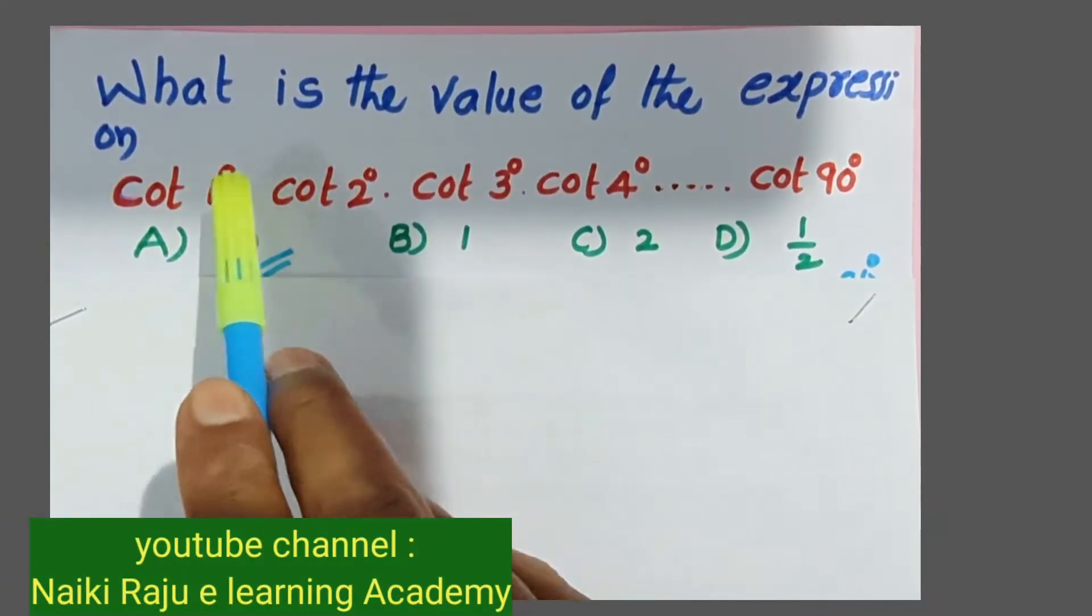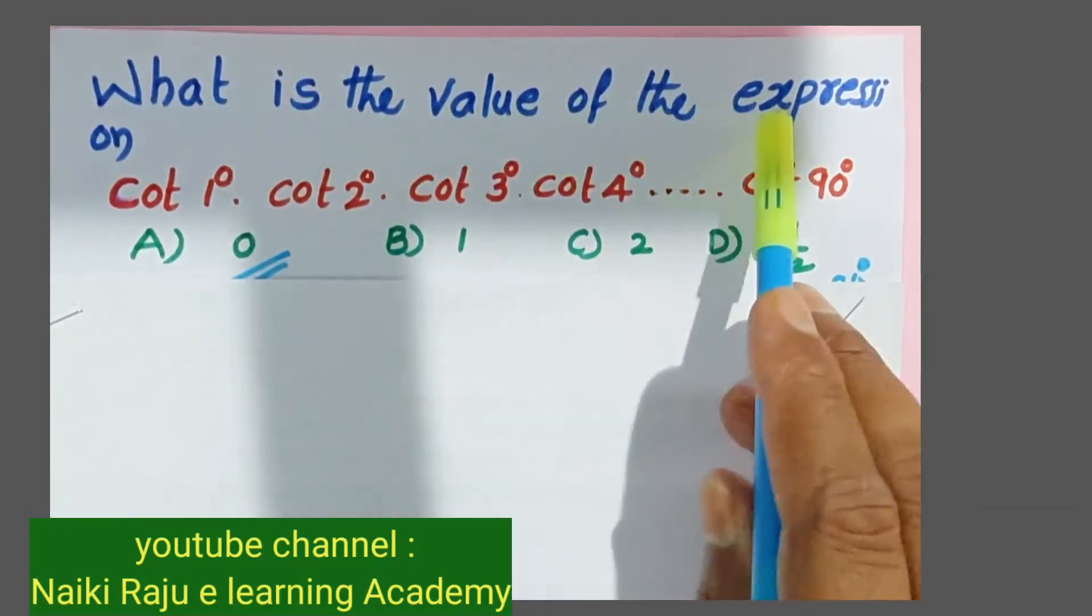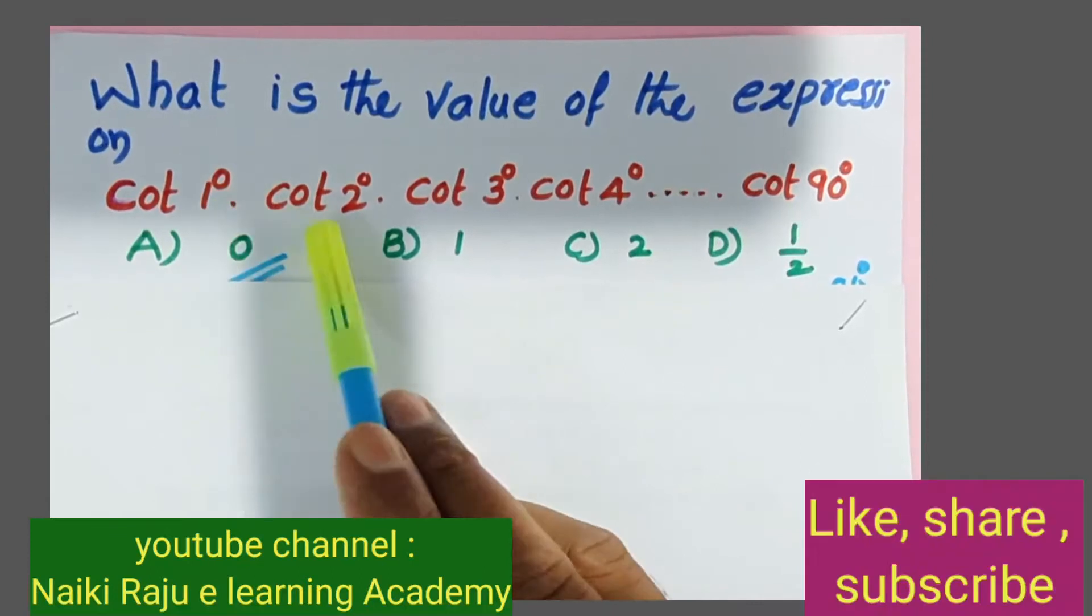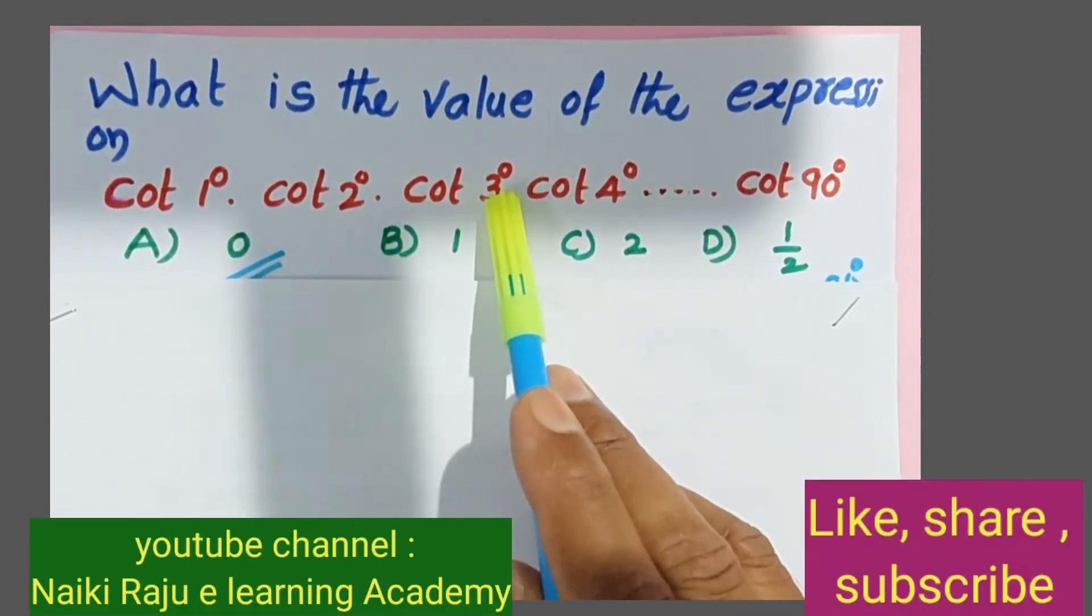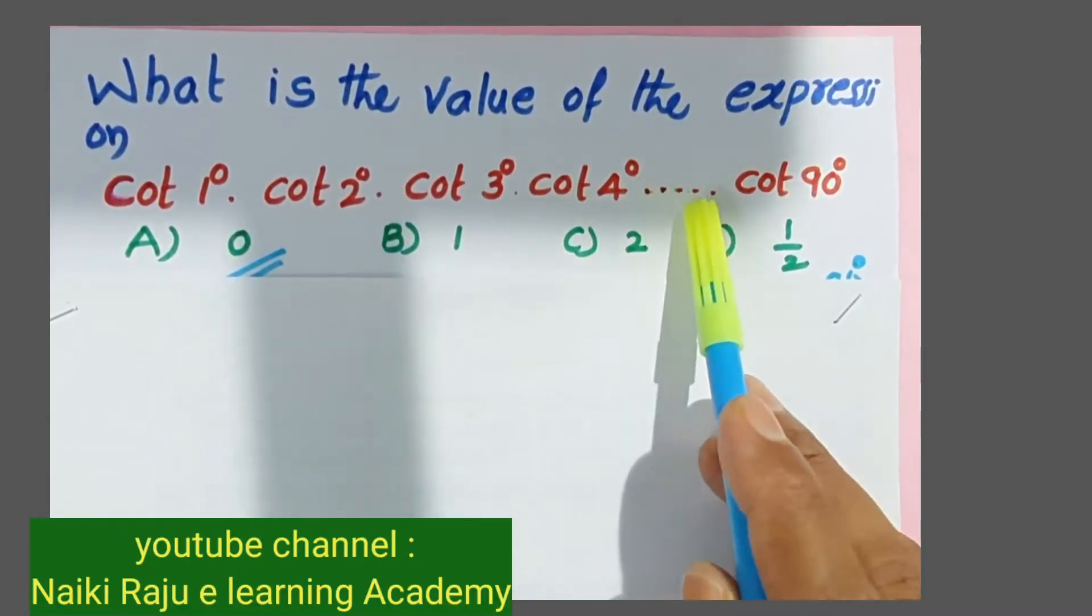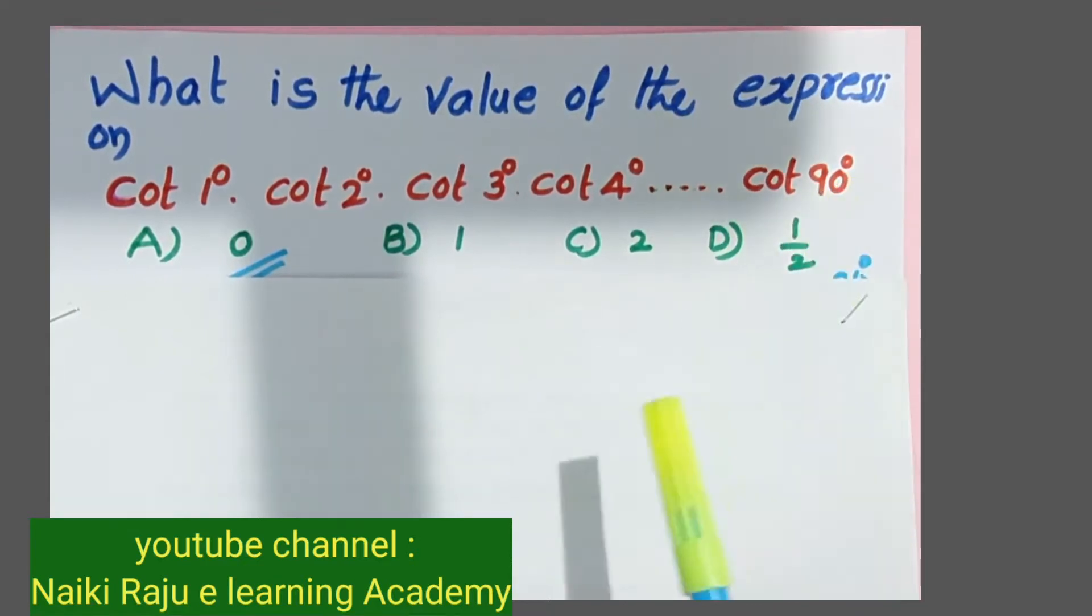Hi students, observe the question. What is the value of the expression cot 1° · cot 2° · cot 3° · cot 4° and so on, multiply with cot 90°?